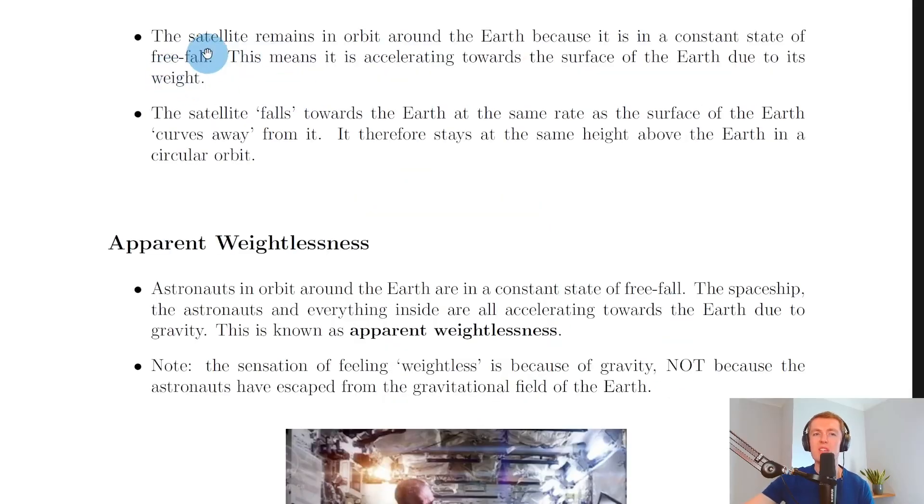The satellite remains in orbit around the Earth because it is in a constant state of free fall. This means it is accelerating towards the surface of the Earth due to its weight. I would say the most important part of the explanation is this bit here.